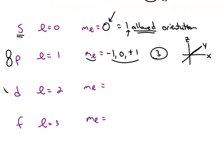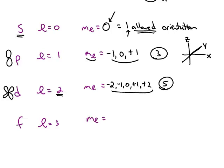A d orbital looks like two p orbitals stuck together. L is two, and m sub l ranges from negative two through zero up to positive two, which gives you a total of five allowed orientations for the d orbitals.